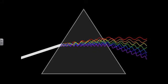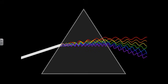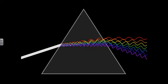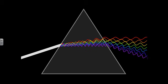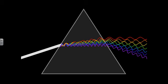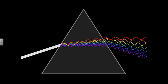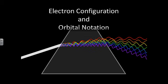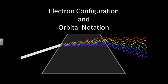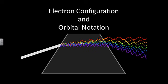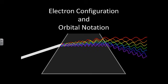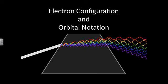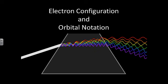In the last video, you learned about atomic spectra and the areas electrons can be found on the periodic chart. In this video, you will learn to write the two ways to indicate the location of electrons in the atom: electron configuration and orbital notation.